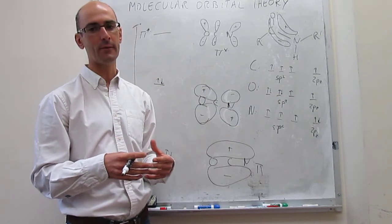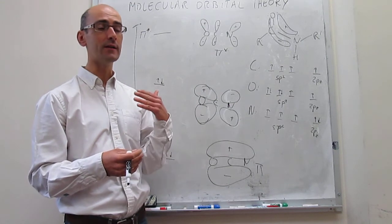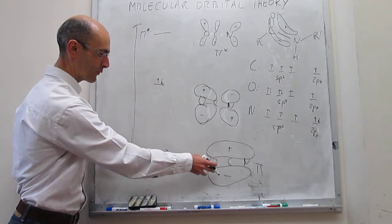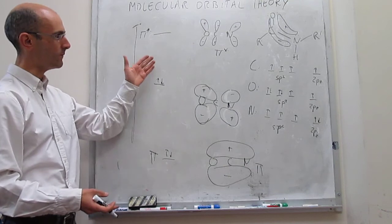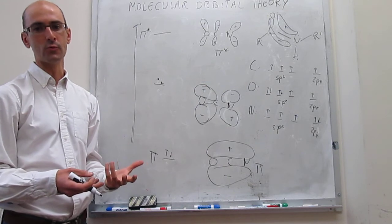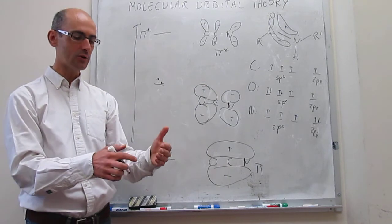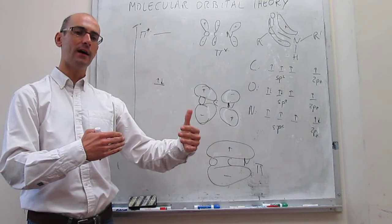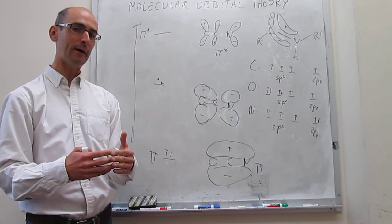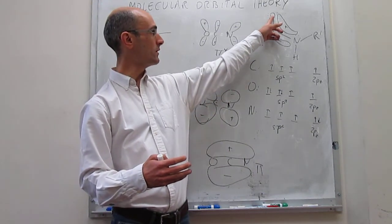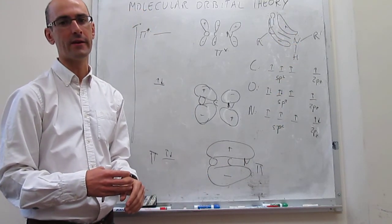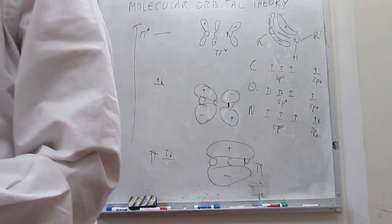The presence of this delocalized pi molecular orbital — not localized between just carbon and oxygen as the Lewis structure suggests, but extending across the peptide bond — is what causes planarity. This planarity is responsible for a variety of interactions between peptide chains and is highly responsible for many of the structures we see in proteins. This is an application of molecular orbital theory to polyatomic molecules with more than two atoms, showing that molecular orbitals can be delocalized across multiple atoms.